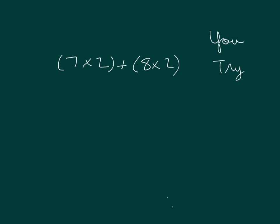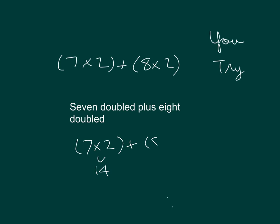Come up with the words and then also the value of the expression. You might have come up with the words 7 doubled plus 8 doubled. And then when we figure it out, we get 30.